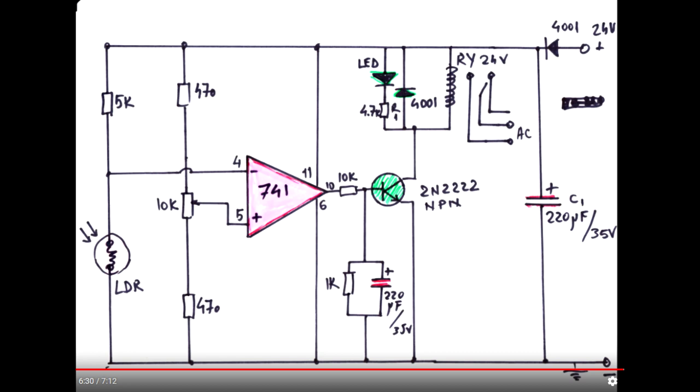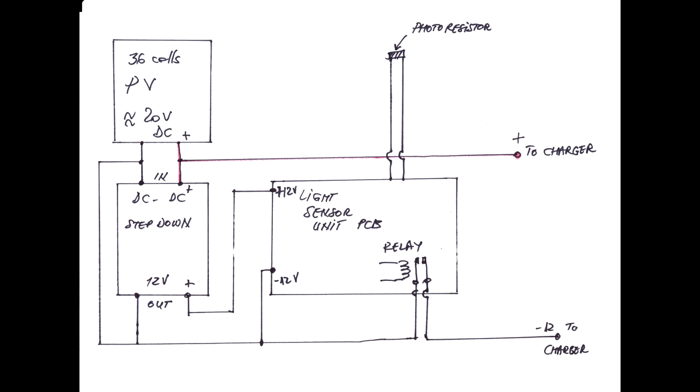Then we have a follower NPN transistor connecting the relay on and off, a diode in parallel with the relay. It keeps it safe for transient currents or something. Anyway, everything happens like the connection schematic is showing.